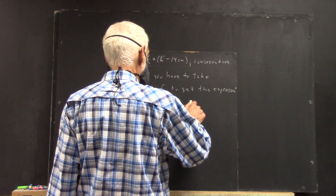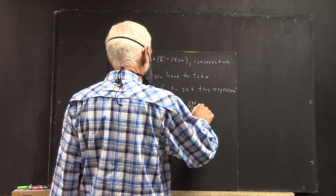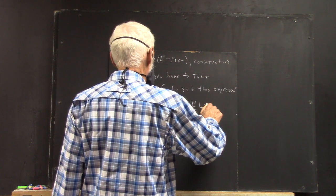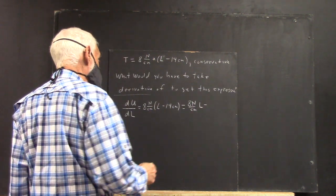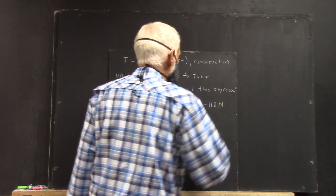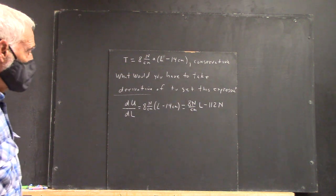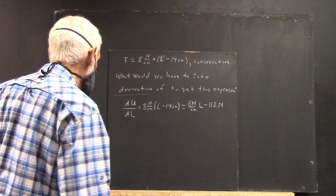So we have 8 newtons per centimeter times L minus, well, 8 times 14 is 112. I did my arithmetic. 112 newtons, right? Because newtons per centimeter times centimeters.